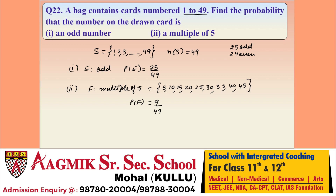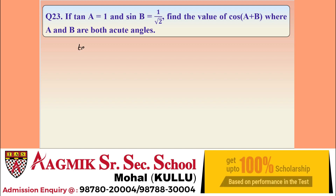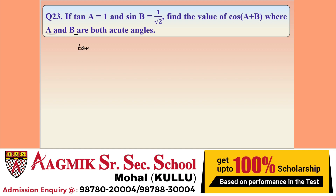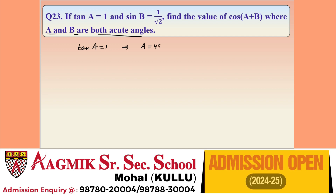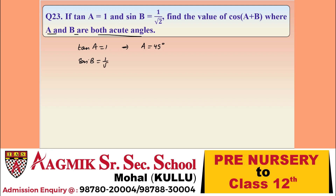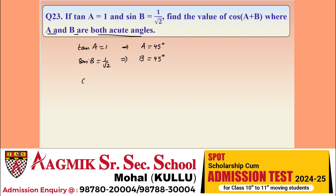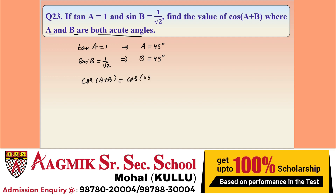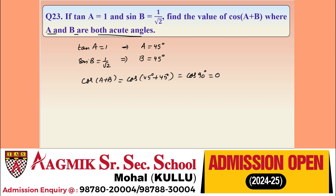Question 23: given tan A = 1 and sin B = 1/√2, where A and B are acute angles, find cos(A + B). Since tan A = 1, angle A = 45°. Since sin B = 1/√2, angle B = 45°. Therefore cos(A + B) = cos(45° + 45°) = cos 90° = 0.